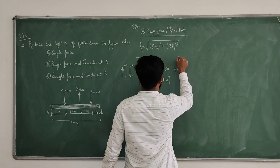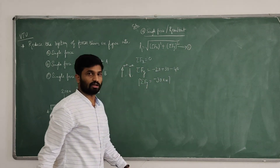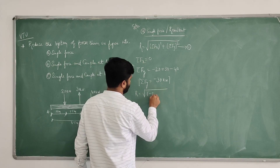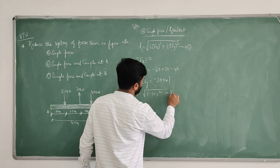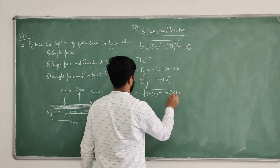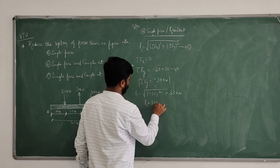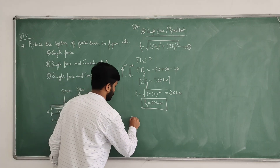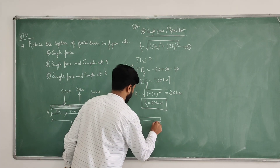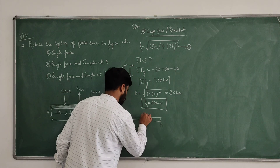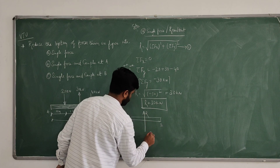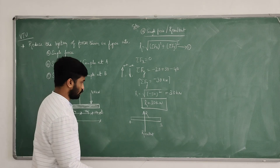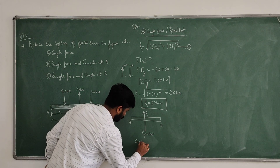Substituting these two values into the equation, R equals the square root of 0² plus (−30)² equals 30 kilonewtons. We can replace the entire force system on bar AB by this single resultant force R. This system is called the single force system.